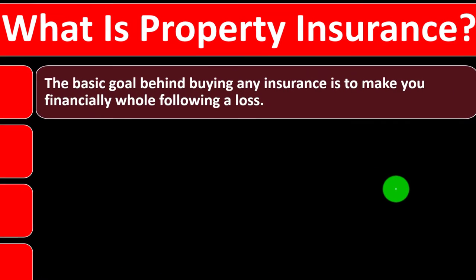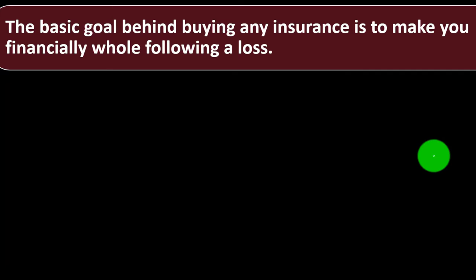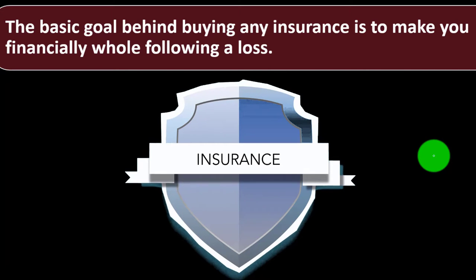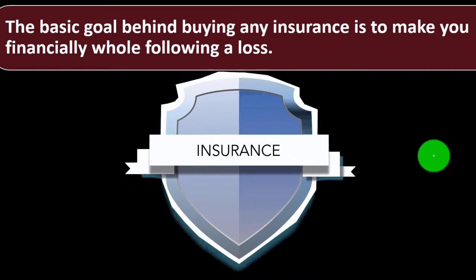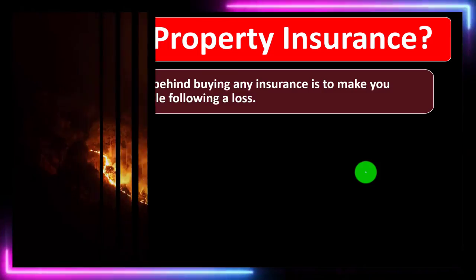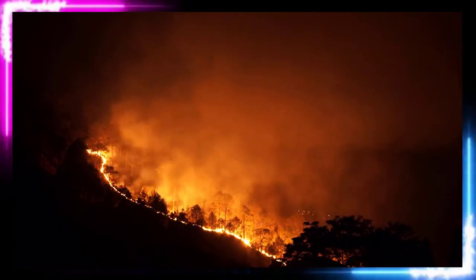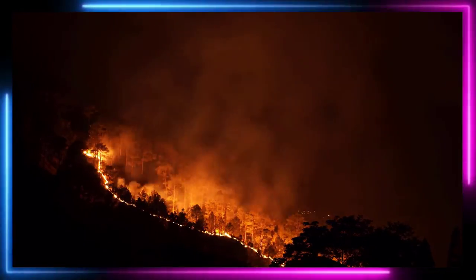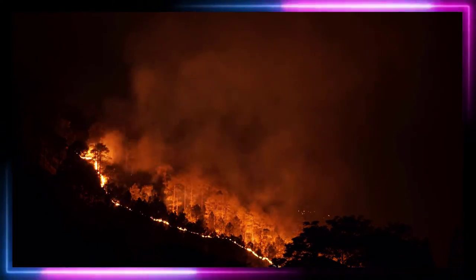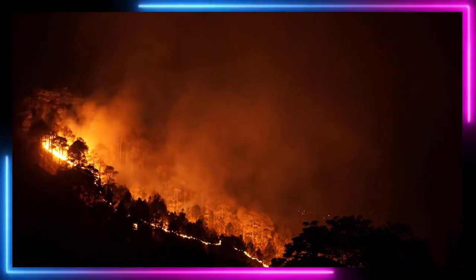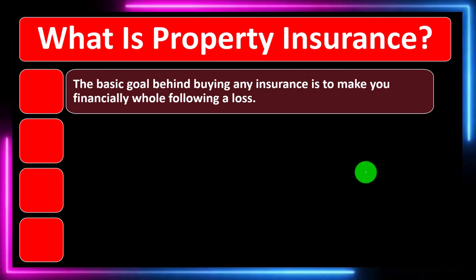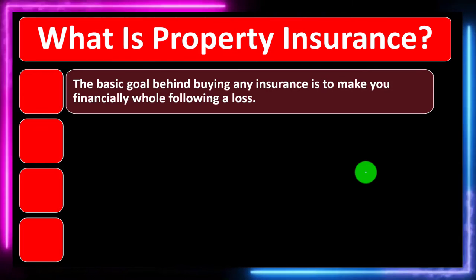What is property insurance? The basic goal behind buying any insurance is to make you financially whole following a loss. As discussed in prior presentations, insurance is a type of risk mitigation tool for a future event that could possibly happen. For example, if we're insuring against fire that could happen in the future, when we buy the insurance it doesn't mean we want the fire to happen. We're still hoping, of course, that the event does not occur when we buy the insurance.